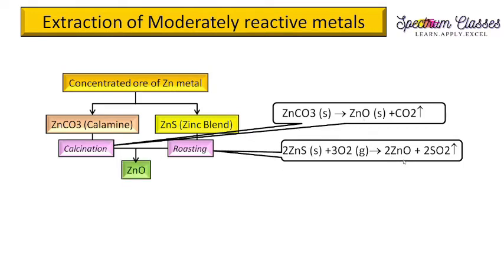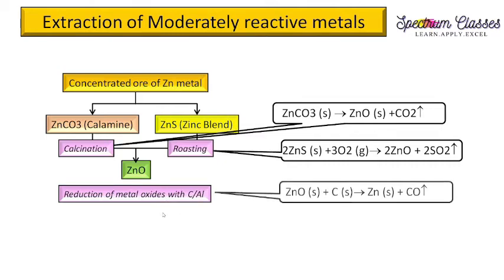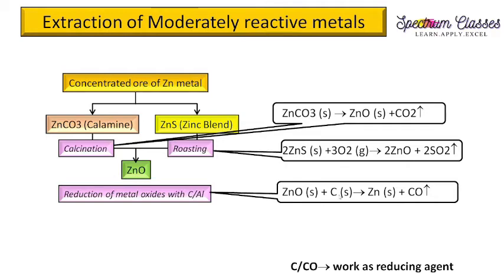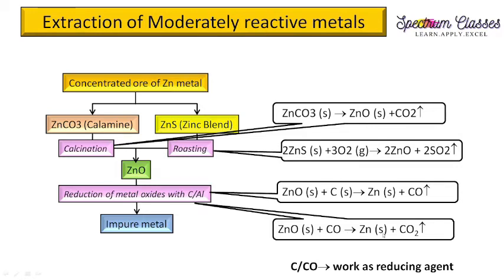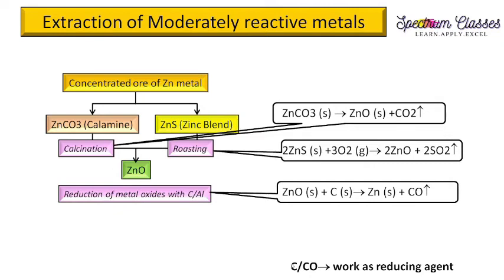Zinc oxide on reduction with carbon or aluminium gives impure metal. The reaction is: ZnO + C → Zn + CO. Reduction of metal oxides by carbon is governed by the Ellingham diagram, which we will discuss in the next video. Carbon monoxide can also be used: ZnO + CO → Zn (solid) + CO₂. So carbon and carbon monoxide both act as reducing agents, and the resulting zinc is impure and requires purification.